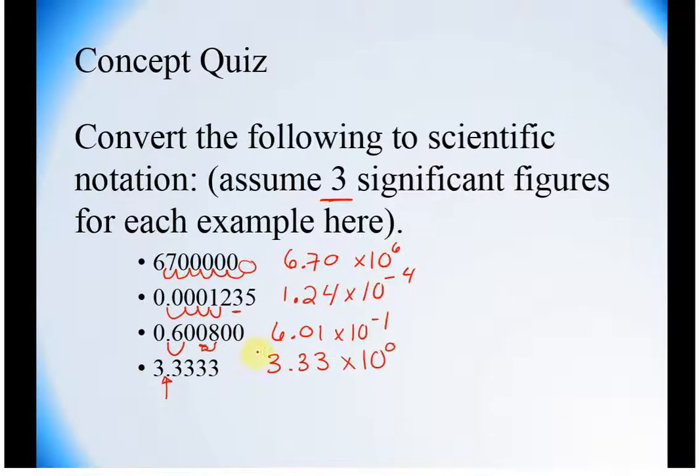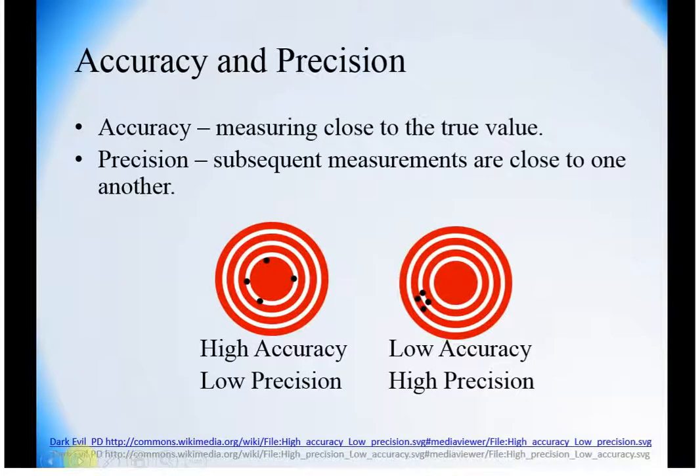In your calculator, 3.33 times 10 to the 0 gives you 3.33. Make sure you are comfortable with scientific notation before you get to the exam. Hopefully, lab will help you with that, but I want you to have the opportunity to really do well.